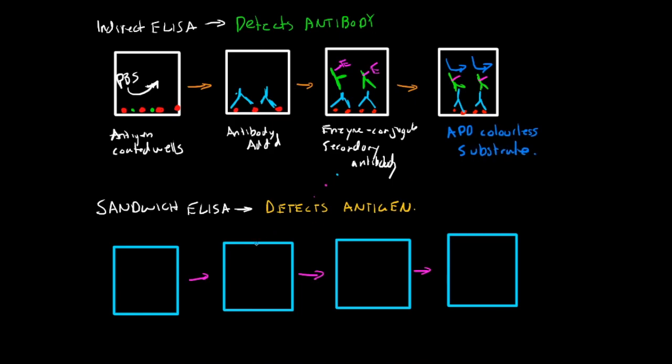Now, in a sandwich ELISA, it's a similar process, but you're looking for a specific antigen. So in this case, we're going to have antibodies that are bound to the wall by their FC portions, because you want to have their variable regions exposed for the antigen that you're looking for.